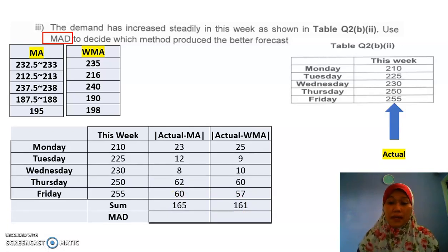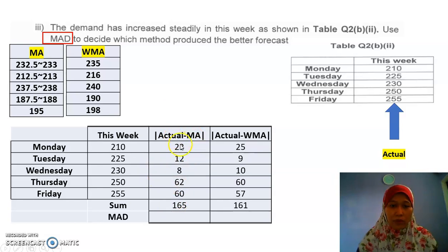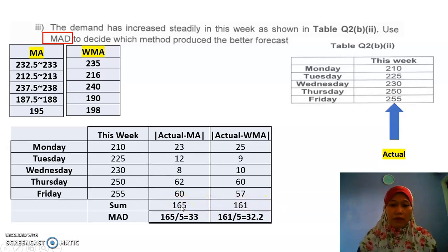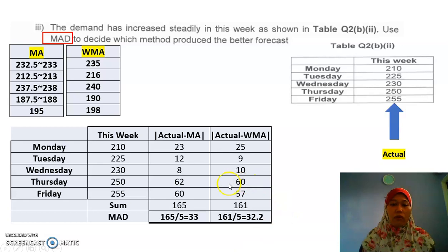Then calculate the MAD. To calculate MAD, take the sum and divide by the number of errors you have. In this case there are five errors for both the moving average and the weighted moving average. MAD for moving average is 33, and MAD for weighted moving average is 32.2.